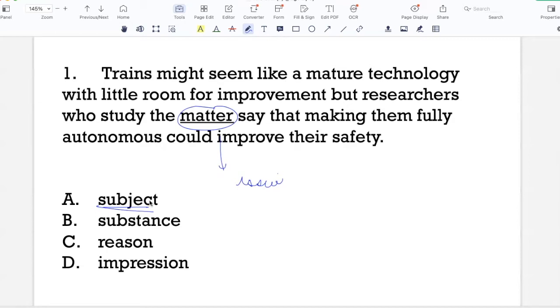So I like a substance cannot be used in place of matter here. Substance would be used in a more physical sense. For example, what's the substance of this alloy, as in what is this alloy made of?